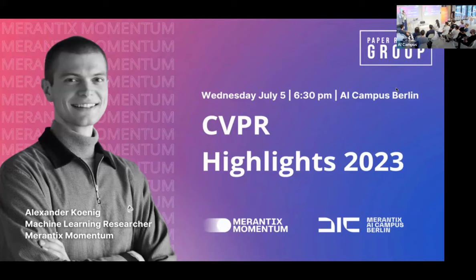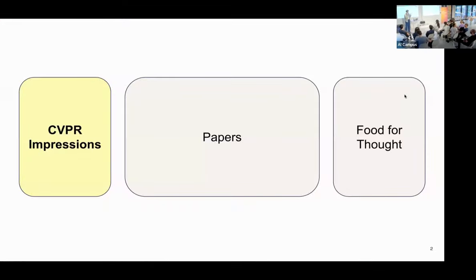I started as a machine learning researcher at Merentix Momentum about one and a half years ago. Max, who's sitting here, is one of our co-authors of a workshop paper we submitted and presented at CVPR this year, which was one of the reasons I traveled there. I'll structure this talk in three segments: first, general impressions from CVPR; then nine papers at a high level overview; and finally, some food for thought from the keynote talks.